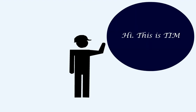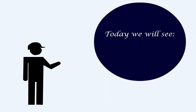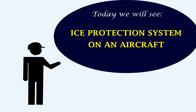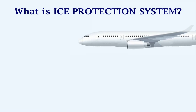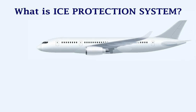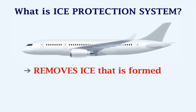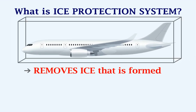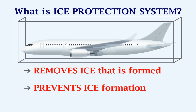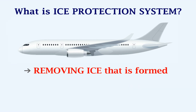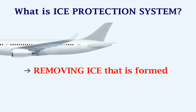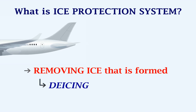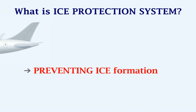Hello, this is Tim. Today we will talk about the ice protection system on an aircraft. First, let's look at what is an ice protection system. On an aircraft, this system is used to remove ice that is already formed, or it is used to prevent the formation of ice. The process of removing ice that is already formed is called de-icing. The process of preventing ice formation is called anti-icing.